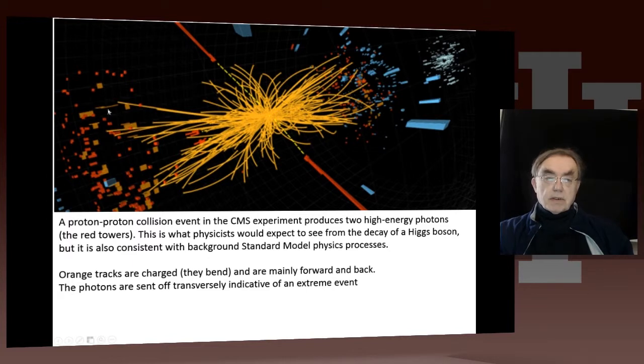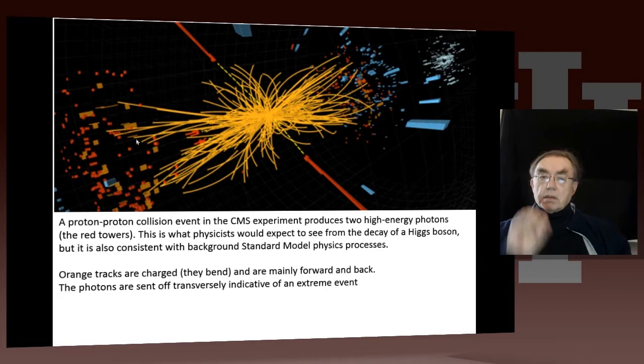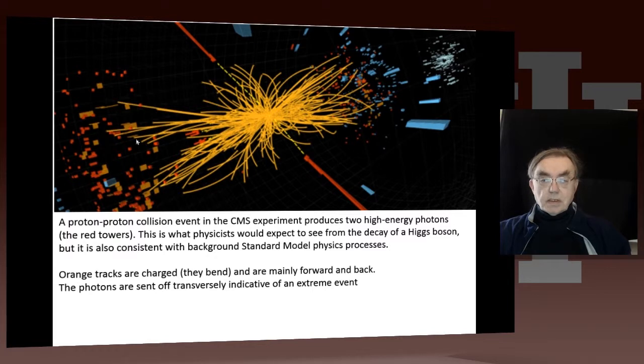And these are the signals you get when the particles enter, so they're called calorimeters, which respond to the impact of particles. These things here are the photons, which are, remember, one of the decay channels of the Higgs was two photons. And as I said, the orange tracks are charged, and they're mainly forward and back. You can see that, but again, there are some sideways.